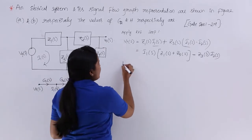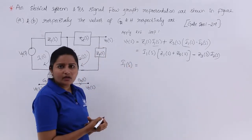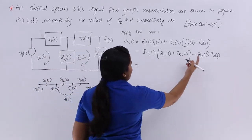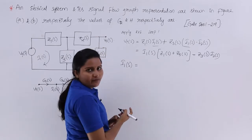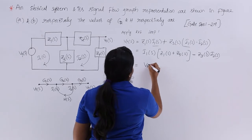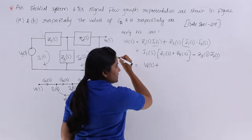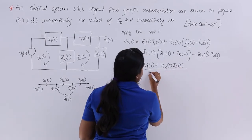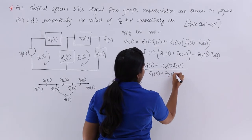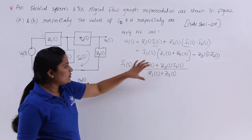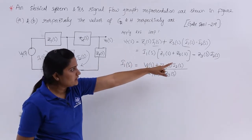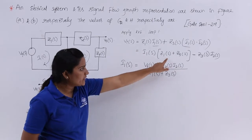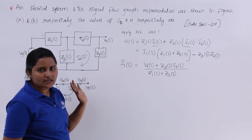Now I want to isolate I1(S). Rearranging the loop 1 equation, I1(S) equals Vi(S) plus Z3(S)·I2(S), all divided by (Z1(S) + Z3(S)). This is the expression for I1(S) from KVL of loop 1. Now I will apply KVL for the second loop.